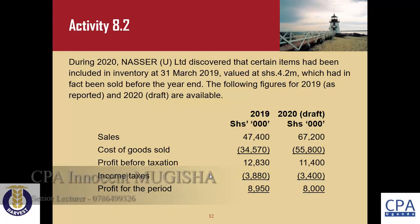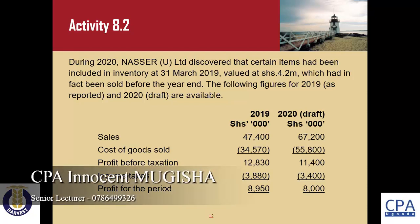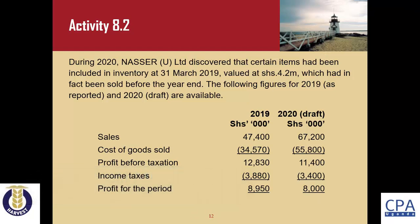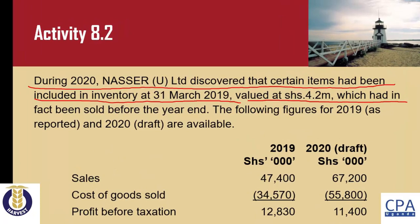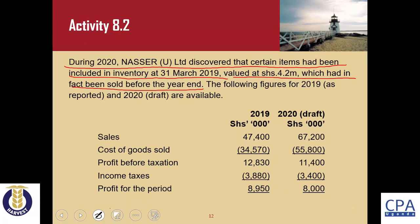Welcome to our discussion for the solution to Activity 8.2. We have just covered our lecture on prior period errors as covered under IAS 8. During 2020, NASA Uganda Limited discovered that certain items had been included in the inventory as at 31st of March 2019. These items were valued at 4.2 million, which had in fact been sold before the year end. This is an example of a prior period error where inventories were included and yet these inventories were already sold.